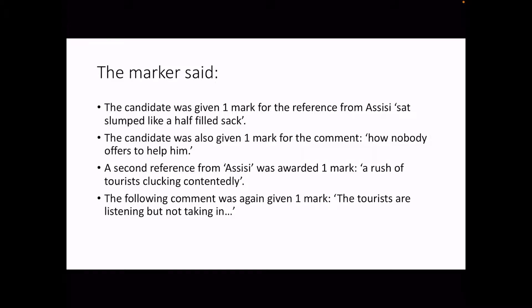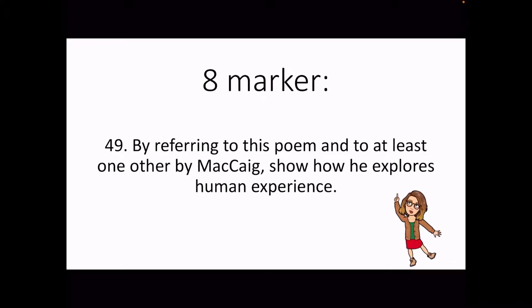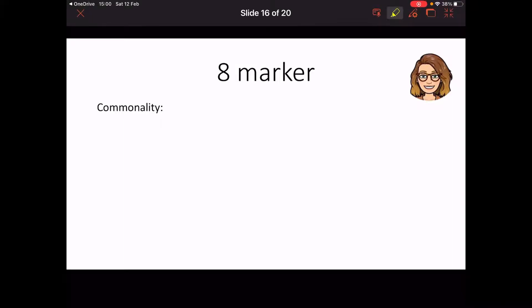We're going to go through one together as a final example so you get a clear sense and we can talk it through as we do it. Question 49 in this imaginary exam — I've made this up myself: 'By referring to this poem and to at least one other by McCaig, show how he explores human experience.' We're going to pretend that Assisi is the poem in front of us, and then I'm going to choose a second poem — I'm going to go with Visiting Hour. You can pick any because every poem has a human in it. The only mistake would be picking Basking Shark and trying to explain how the shark has a human experience.